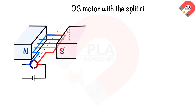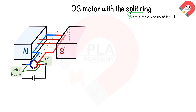The DC motor with the split ring commutator: the split ring commutator swaps the contacts of the coil. The carbon brushes make sliding contact with the split ring as the coil rotates; the carbon brushes are at rest. When the current flows through the split ring and coil, the force on the blue side